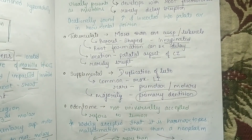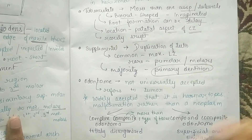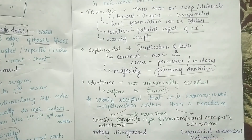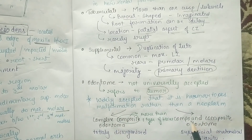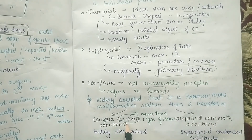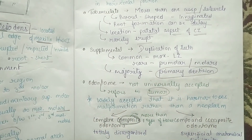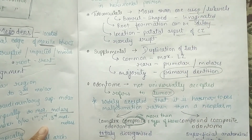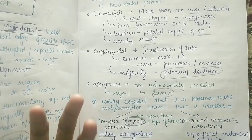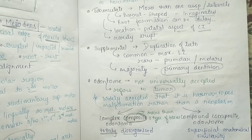Odontome is universally accepted — it is mainly covered in the cyst chapter as it is considered a tumor, but widely accepted as a hamartous malformation rather than a neoplasm. It is of two types: complex composite odontome and compound composite odontome. In complex composite, it is totally disorganized — you can't recognize any structure. In compound composite, it is anatomically similar to a normal tooth.